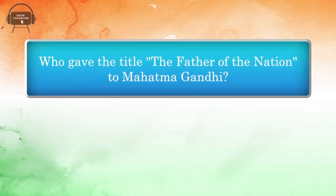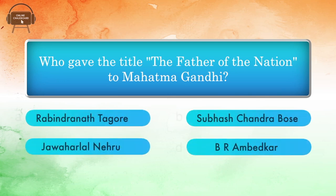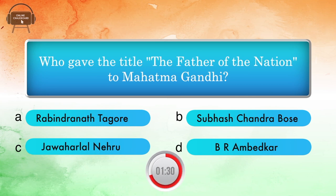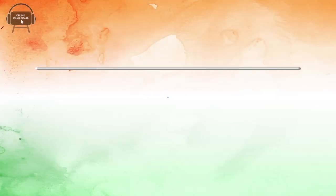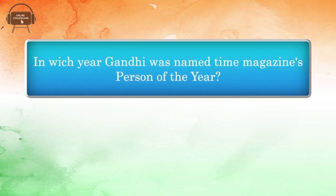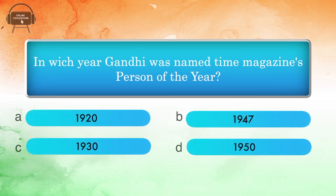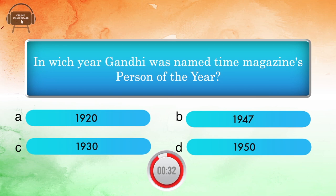Who gave the title 'Father of the Nation' to Mahatma Gandhi? Options: Rabindranath Tagore, Subhash Chandra Bose, Jawaharlal Nehru, B.R. Ambedkar. Answer: Subhash Chandra Bose. In which year was Gandhi named Time Magazine's Person of the Year? Options: 1920, 1947, 1930, 1950. Answer: 1930.